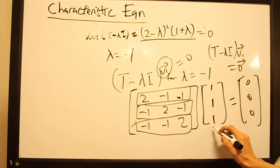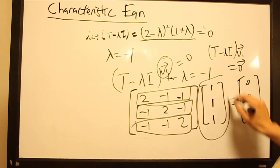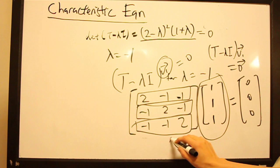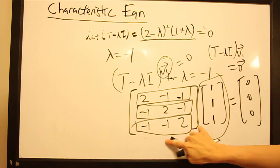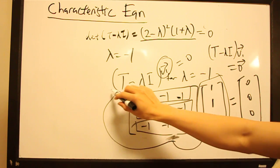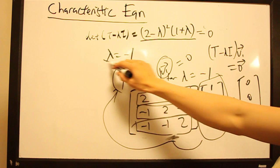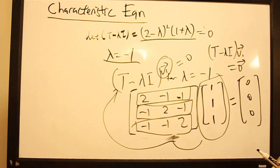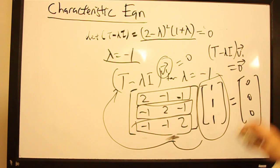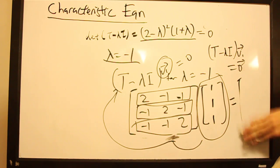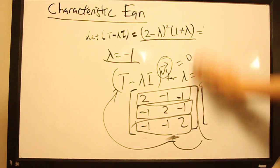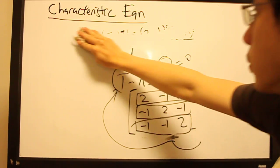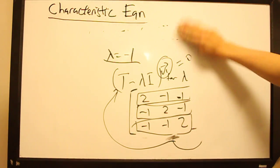This means that the vector [1, 1, 1] is an eigenvector of t with eigenvalue minus 1. Any scalar multiple of [1, 1, 1] is also an eigenvector of t with eigenvalue minus 1. This is how you find eigenvectors and eigenvalues of any linear transformation or matrix using the characteristic equation.